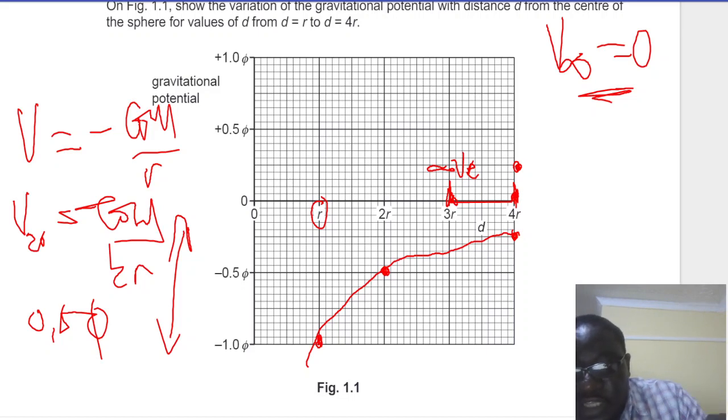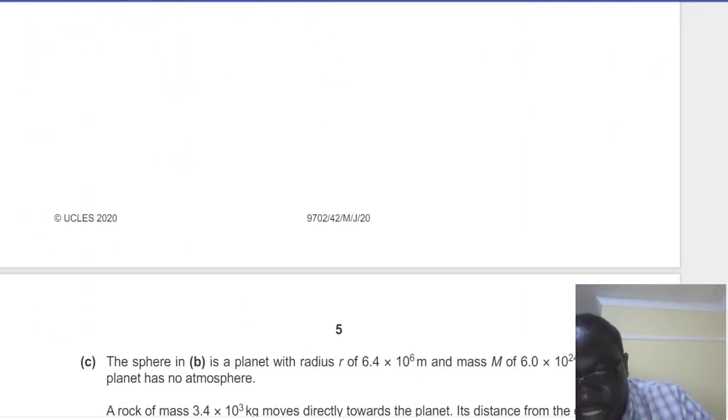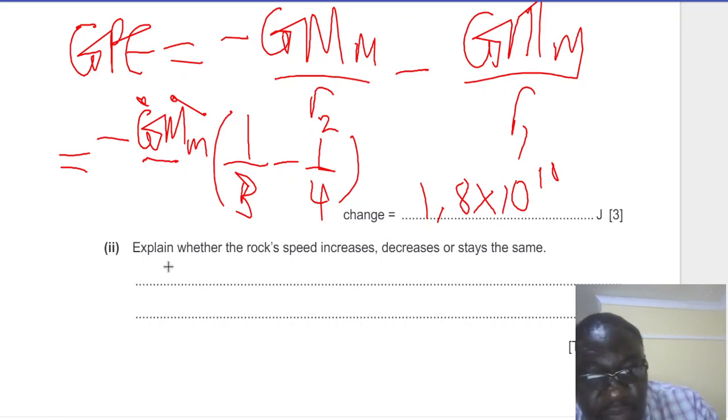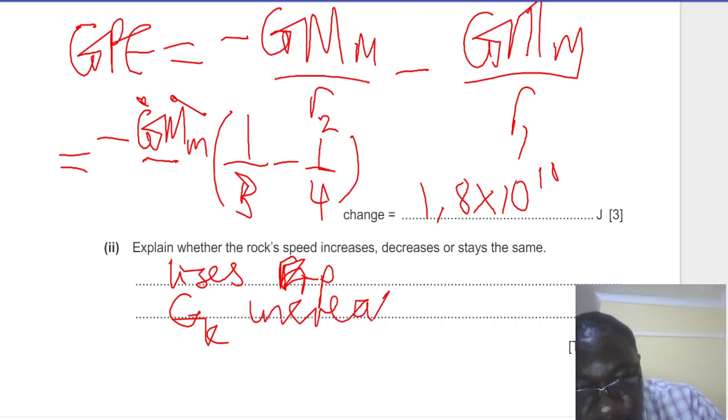So as it moves from 4R to 3R, the value becomes less, becomes more negative. In other words, from 4R to 3R, it has lost potential energy. If it has lost potential energy, it means that its kinetic energy must increase. So it loses Ep, potential energy, therefore the Ek must increase. I hope it makes sense.